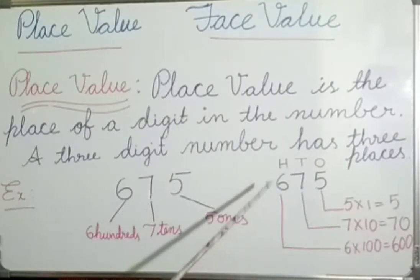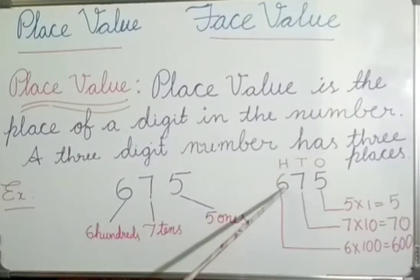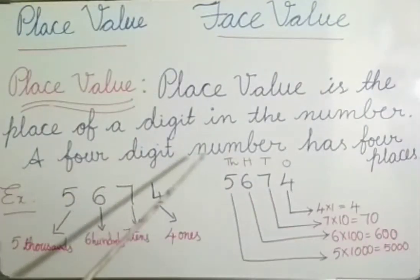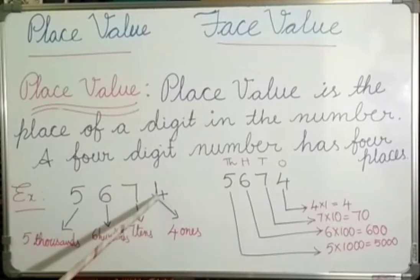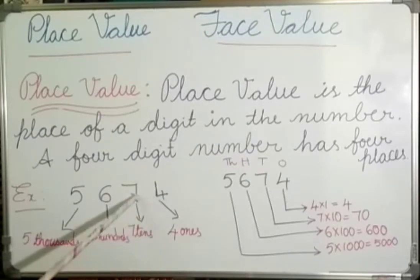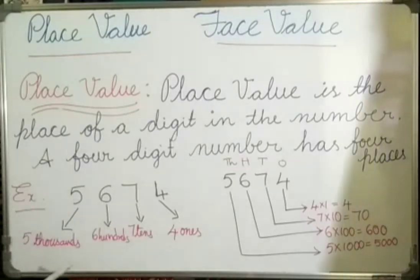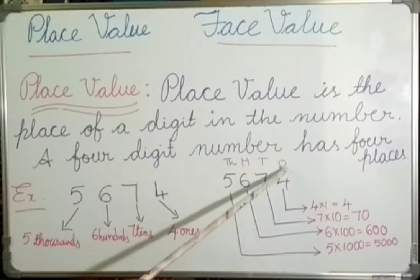Place value is the place of a digit in the number. A 4-digit number has 4 places. In this number, there are 4 ones, 7 tens, 6 hundreds, and 5 thousands. Take the number and write the places.